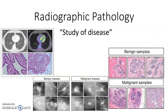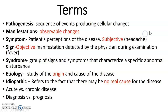Some pathology for radiology terms I want you to be aware of. Study of disease — pathogenesis is the sequence of events producing cellular changes. Manifestations are observable changes. Signs and symptoms: one is subjective, one is objective. A syndrome is a group of signs and symptoms. Etiology is the study of the origin.